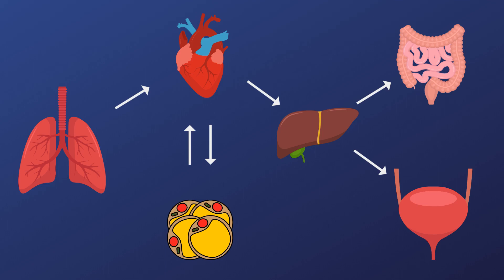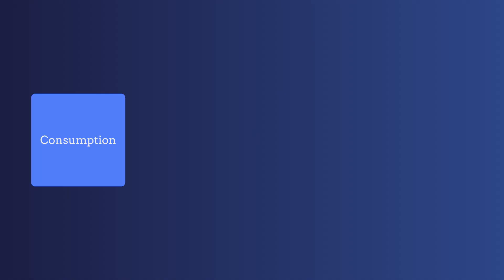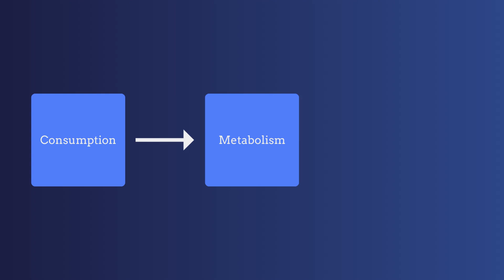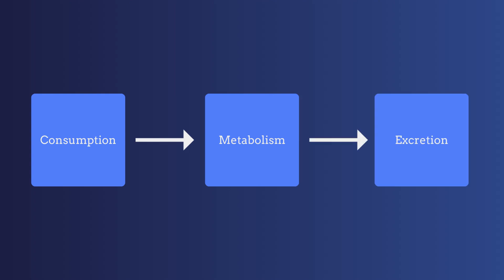The pathway of marijuana in our body can be split into three phases: consumption, metabolism, and excretion.